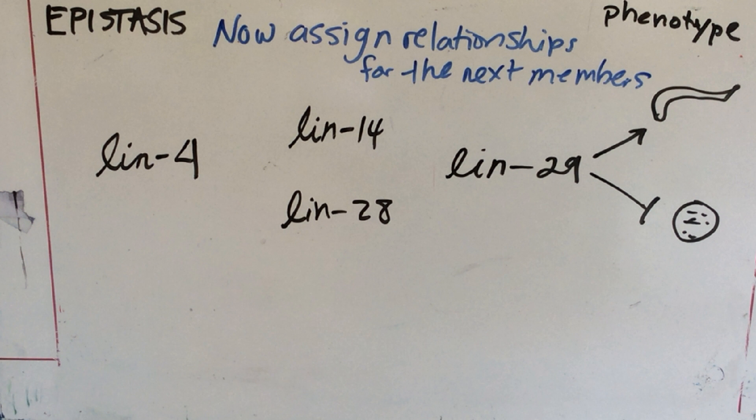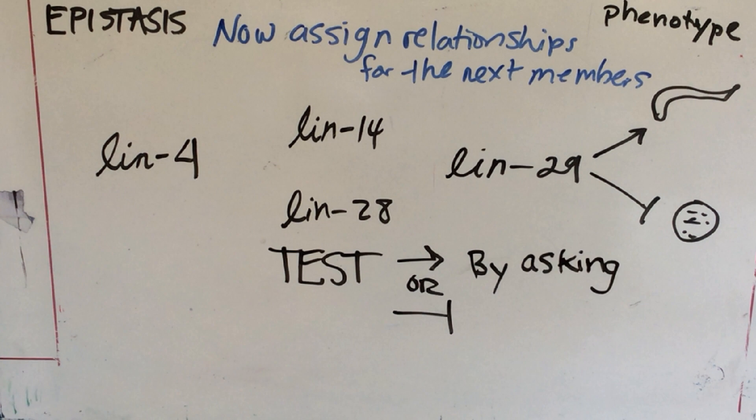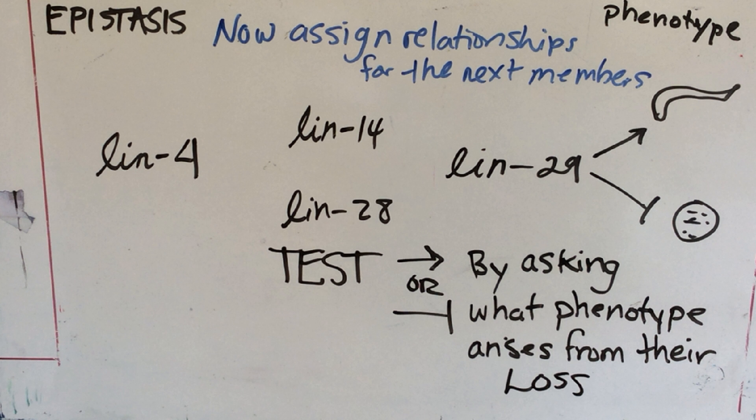So now, we would like to assign relationships to the next members by testing what the loss of function phenotype looks like. Remember, LIN-29 will be active in the rest of these tests.